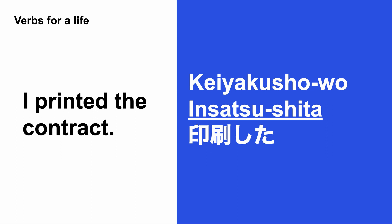The next verb is 印刷した — I printed a contract: 契約書を印刷した. 印刷 means print. 印刷する is present tense, 印刷した is past tense. 契約書を印刷した — I printed a contract.